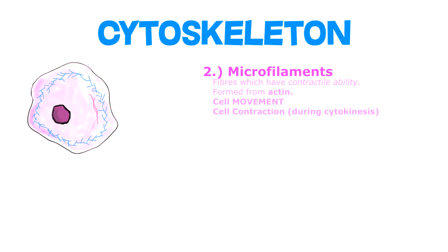We have the microfilaments, which are fibers with contractile ability. They are formed from the protein actin and are responsible for cell movement and cell contraction, including during a process called cytokinesis, where the cytoplasm of a single eukaryotic cell is divided into two.